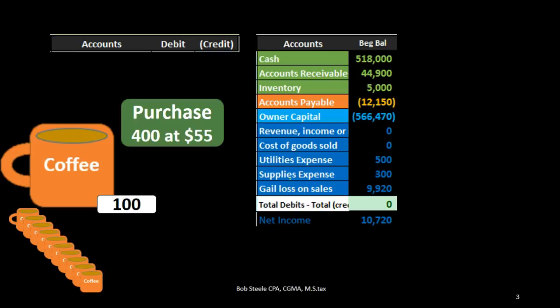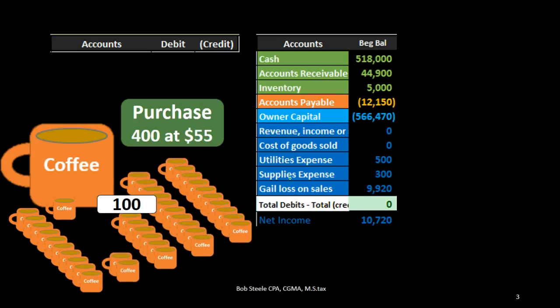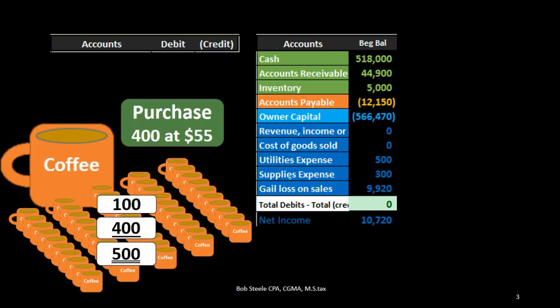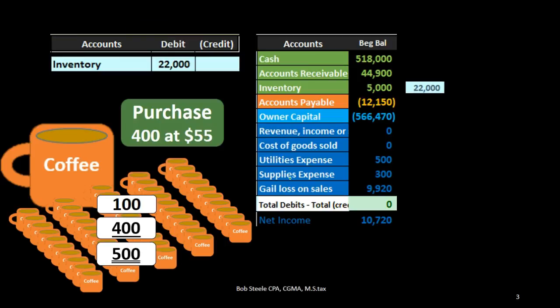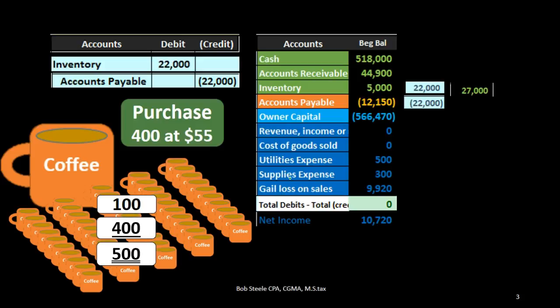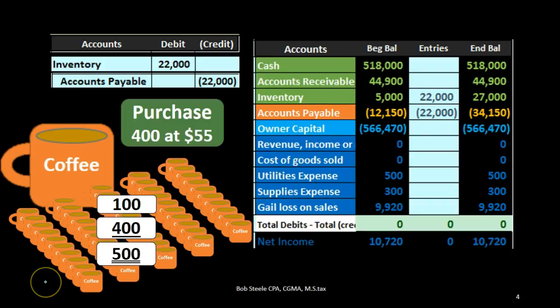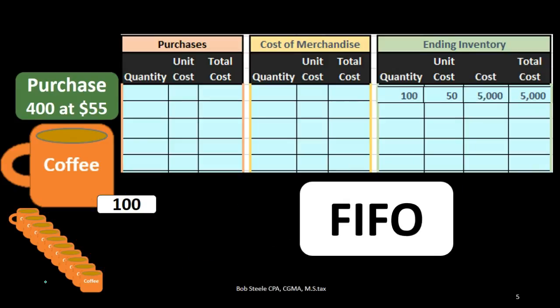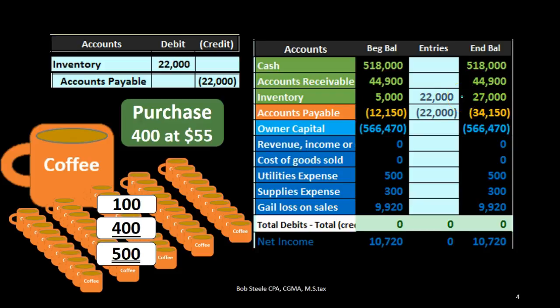The first transaction is the purchase of 400 more units at $55. We had 100 units and now we purchase another 400, giving us 500 units total. The journal entry is straightforward — no estimate involved. We paid 400 times $55, so inventory is debited $22,000, bringing inventory on the trial balance from $5,000 up to $27,000. We bought them on account, so the credit goes to accounts payable, increasing it to $34,150.